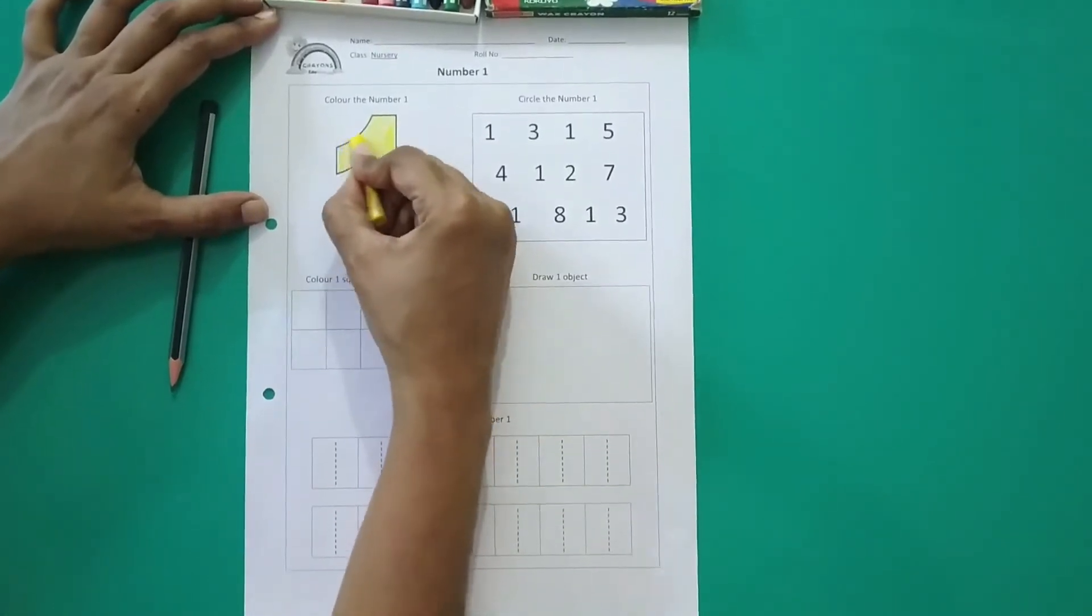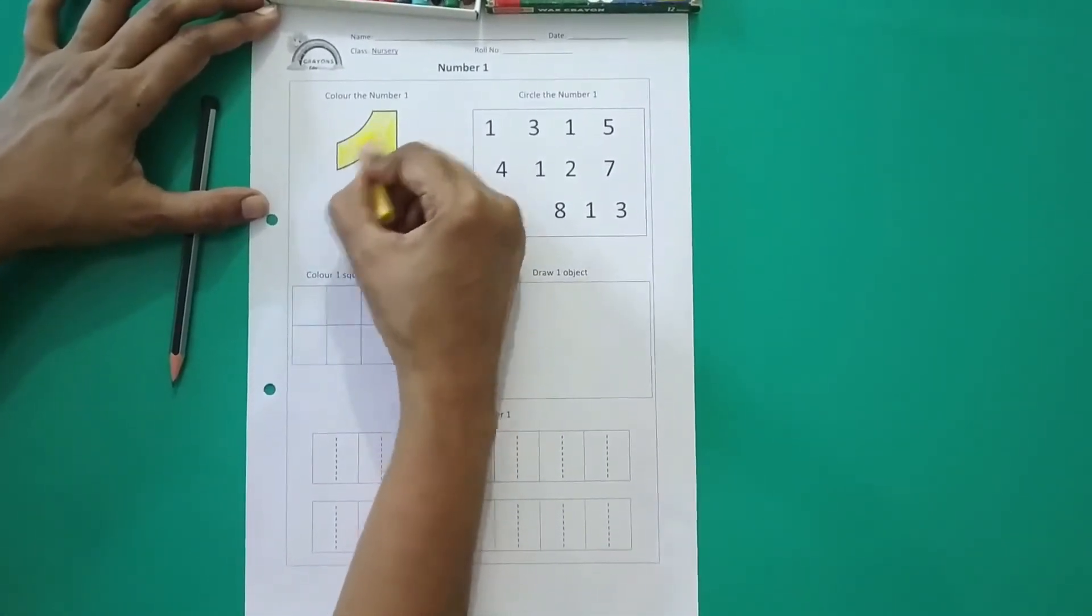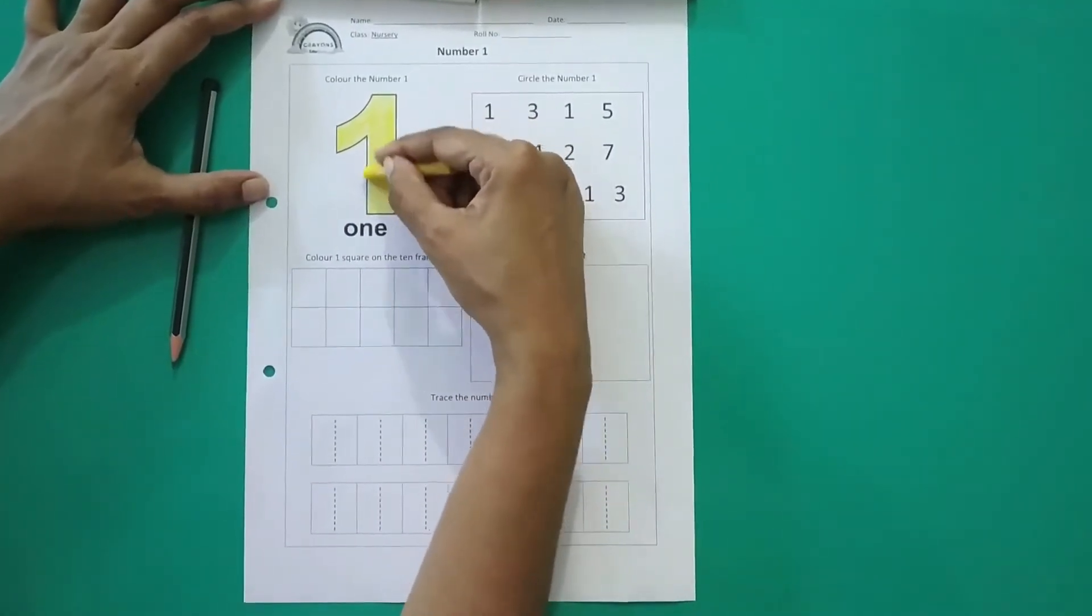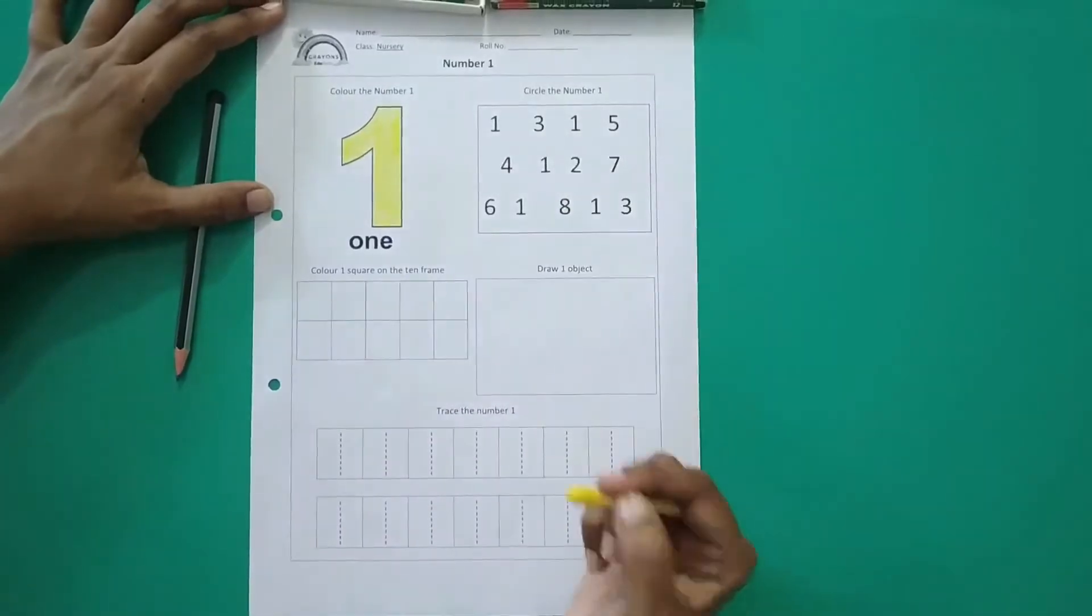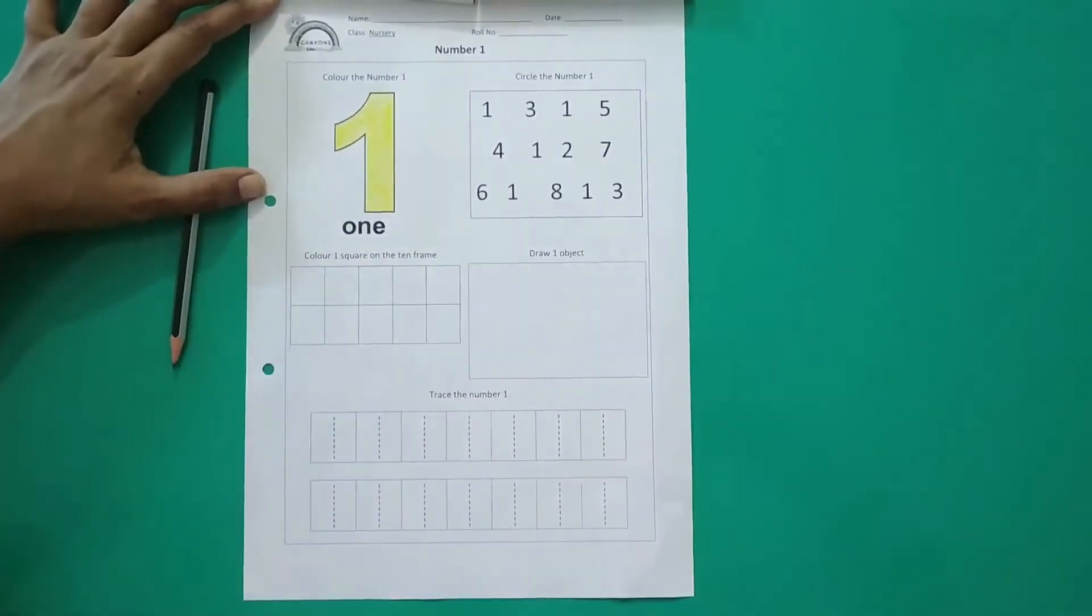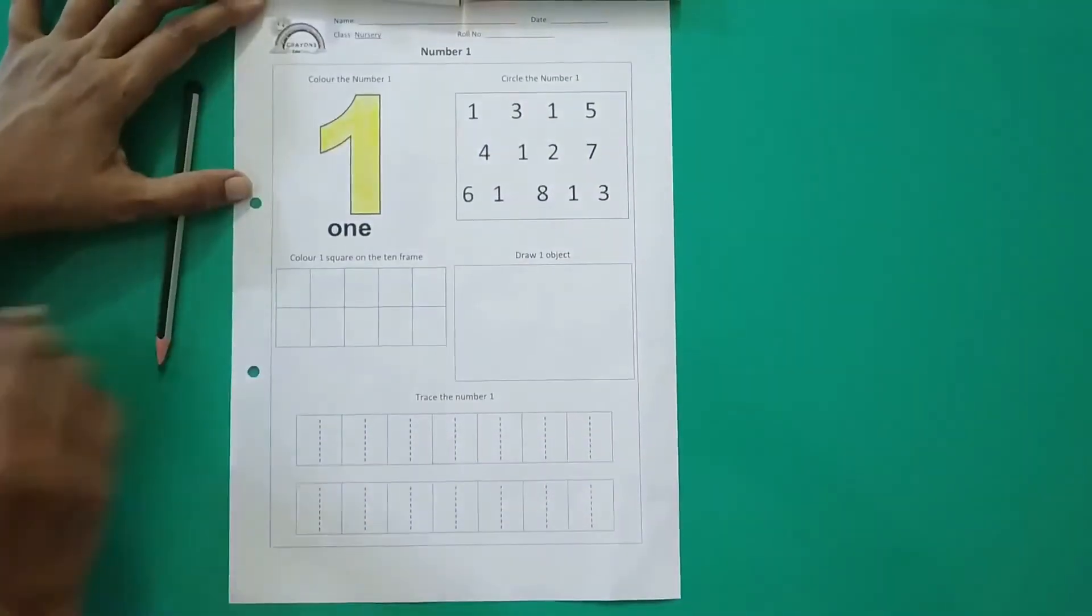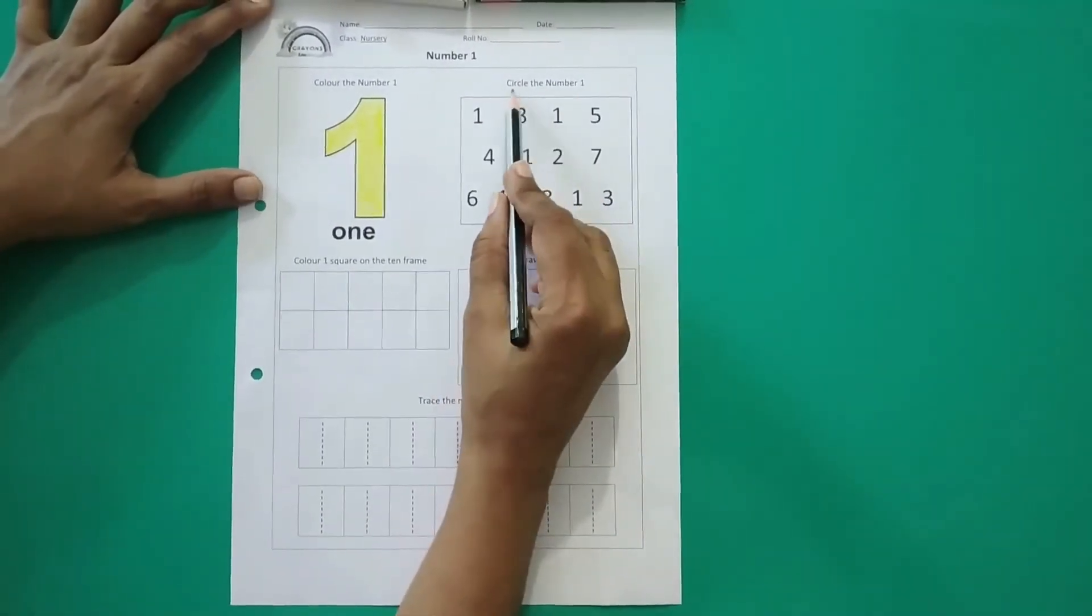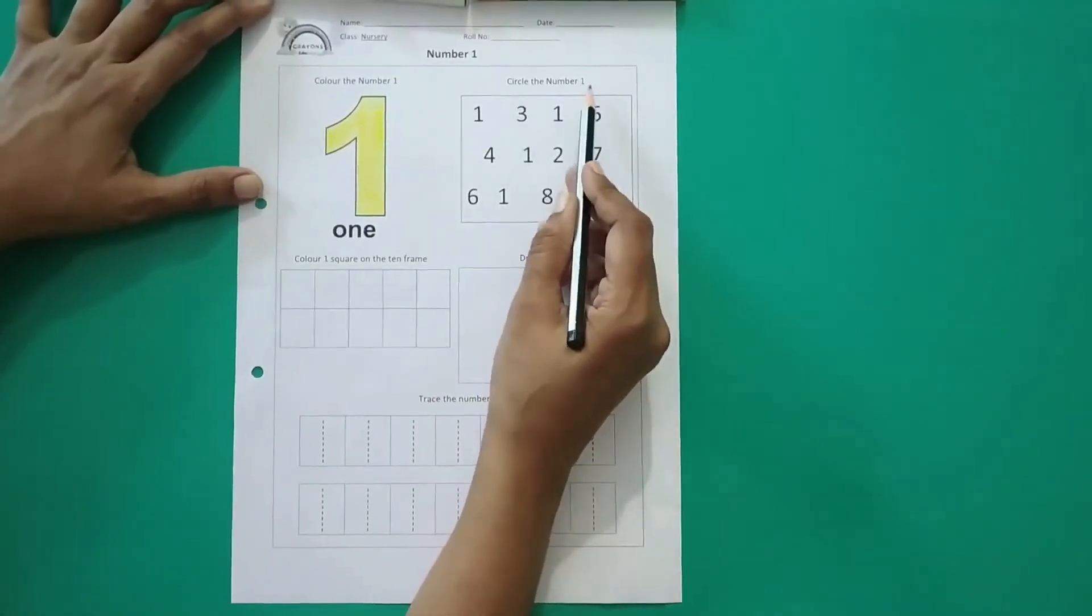Which number are we coloring? Number 1. You have to always repeat it. Then you will remember. Bar bar bolo ge to aapko yaad rahega kaun sa number. This is the number 1. So you have to color this. The next activity, circle the number 1.